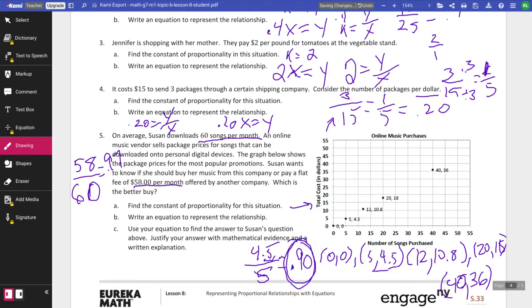So find the constant proportionality for this situation, k equals 90 cents. Write an equation that represents the relationship. Well, same thing we did above. 0.90x equals y. Use your equation to find the answer to Susan's question above. Justify your answer with mathematical evidence and a written explanation. So which is the better buy?